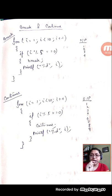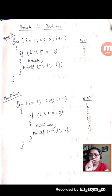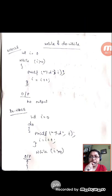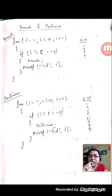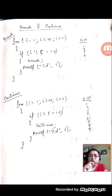Good afternoon students. Today I am going to discuss an example based on break, continue, while, and do-while. You can see here is an example of a for loop where the initial i value is 1, it ends with i less than 10, and i plus plus. There is an if condition: if i mod 5 equals 0, then break, and then printf to print the value of i.